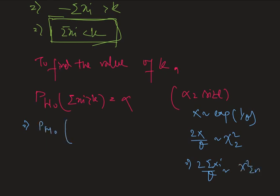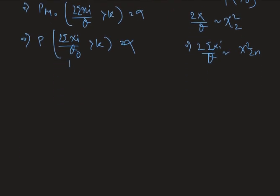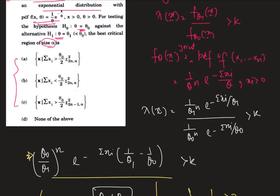So probability under H₀ that 2 times sum over xi divided by theta naught is greater than k equals alpha. This follows chi-square(2n), so the value of k will be chi-square(2n, alpha). Therefore the critical region of the test is sum over xi greater than chi-square(2n, alpha) divided by 2, multiplied by theta naught.